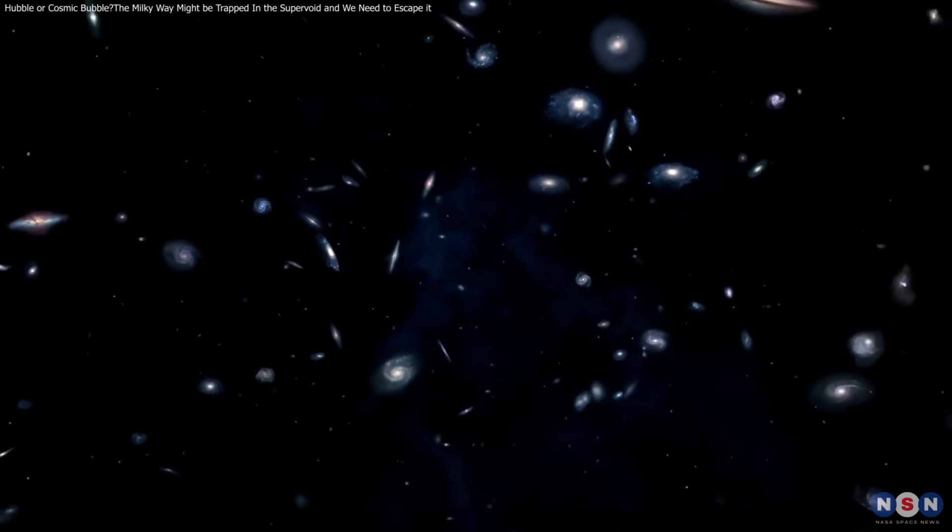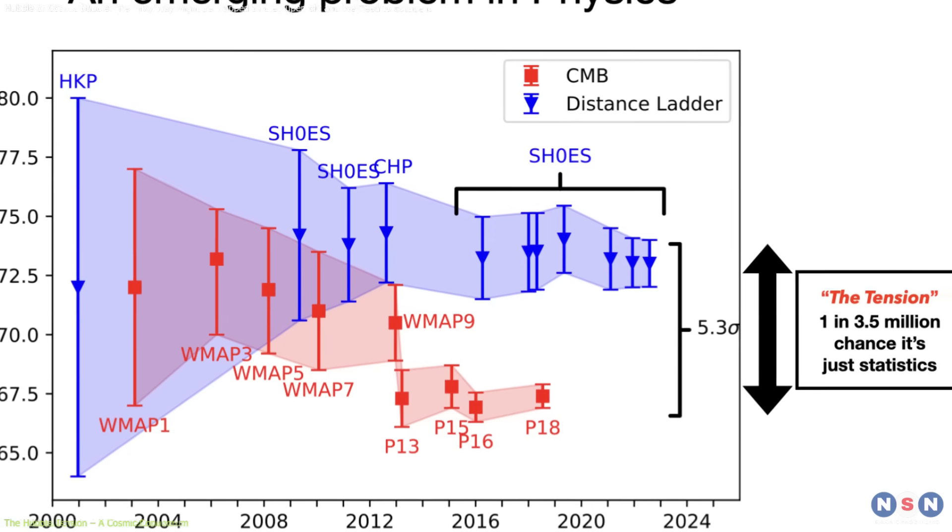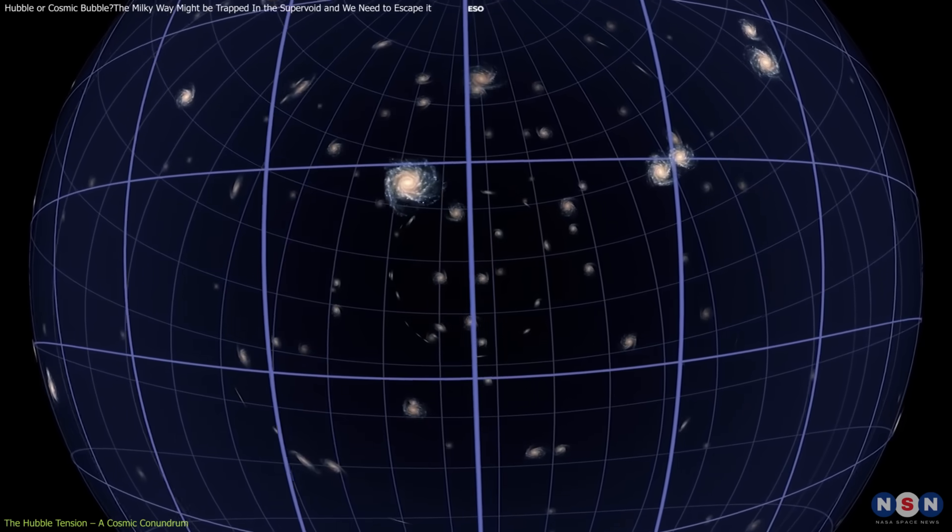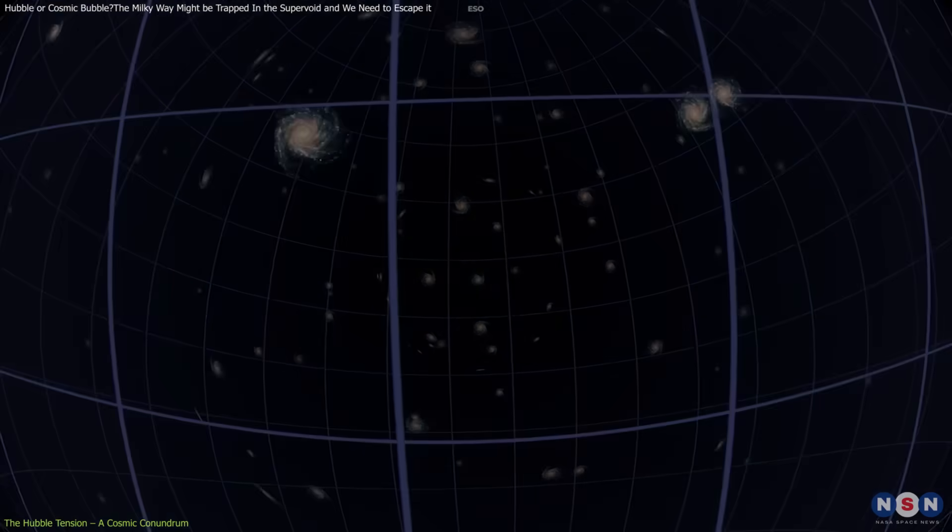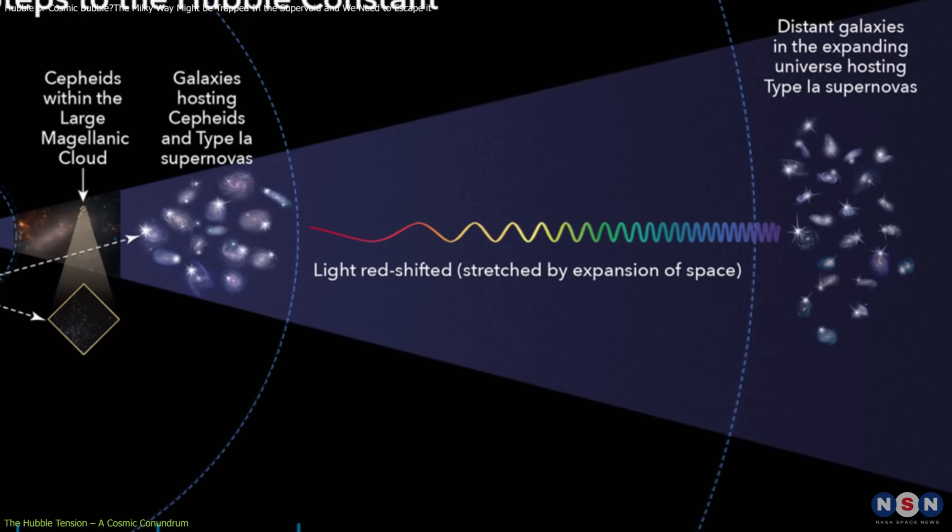The Hubble Tension is a significant puzzle in modern cosmology. It arises from conflicting measurements of the Hubble constant, which quantifies the universe's expansion rate. This constant is determined using two primary methods, each yielding different results.